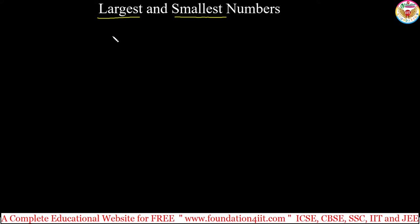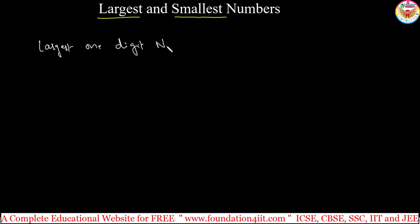Largest and smallest numbers. We already know how to compare numbers from previous topics. When it comes to smallest and largest numbers, for example, what is the largest one-digit number? The largest one-digit, meaning single digit number, is 9.